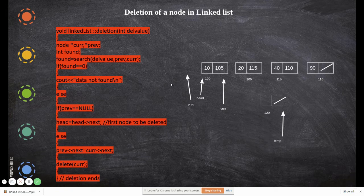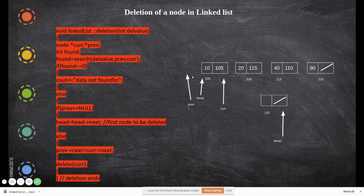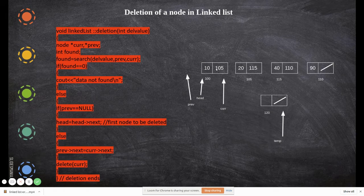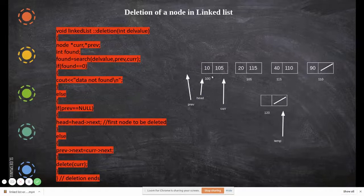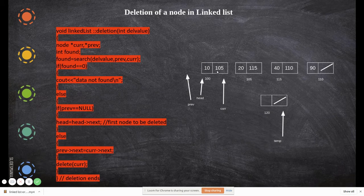In the else part: if previous equals null, that means the node to be deleted is the first node. For example, if I pass the value 10, previous will naturally be null because 10 is the first node. The search returns previous as null and current pointing to the first node. So we move the head to the next node — head equals head next — and the head now points to the second node, removing the link to the first node.